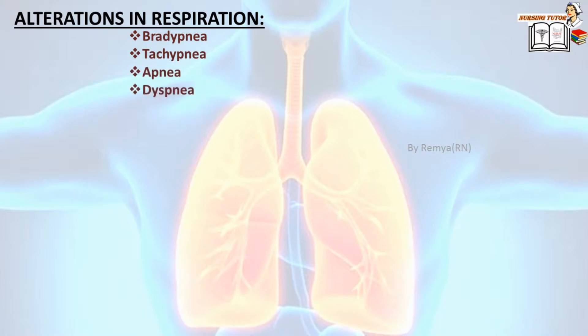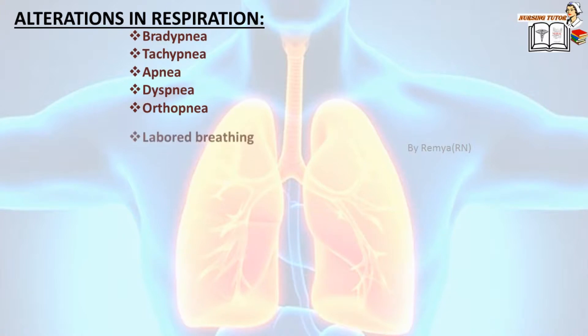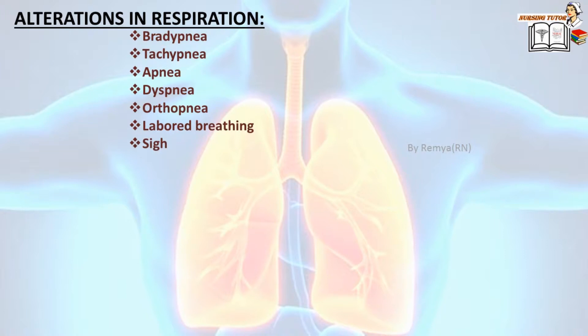Dyspnea — difficulty in breathing. Orthopnea — difficulty in breathing that is relieved by sitting or standing in an upright position. Labored breathing — the client is taking extra effort while breathing. Sigh — a very deep inspiration followed by a prolonged expiration; it is like yawning, but in cases of anxiety the client takes repeated sighs.